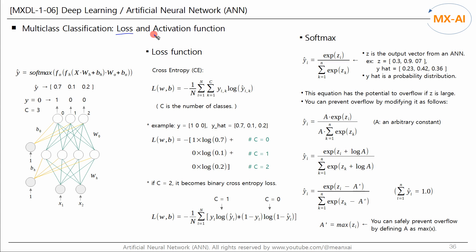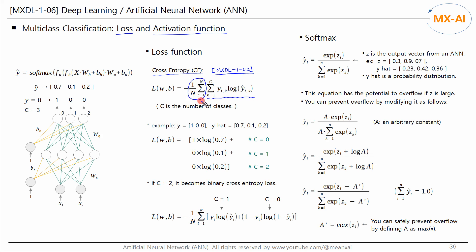Let's look at the loss function and activation function for multi-class classification. Cross-entropy loss is used, and was explored in detail in the second video of this series. To be precise, the average of cross-entropy is used as the loss. This formula is for batch gradient descent, where n is the number of data points and c is the number of classes. If you use mini-batch gradient descent, k is the number of data points in one subset.